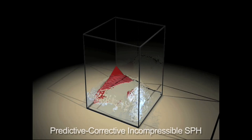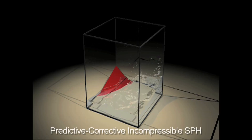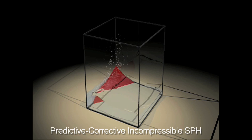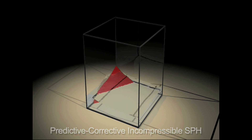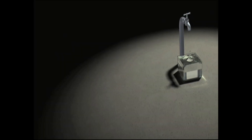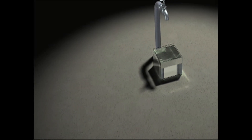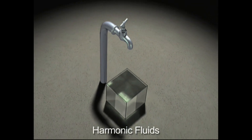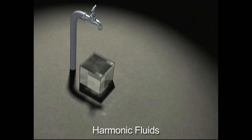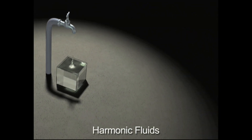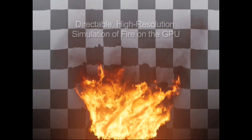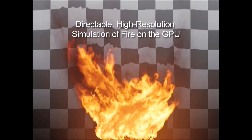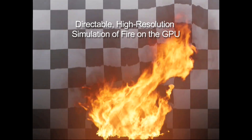As for simulations, a prediction correction scheme maintains incompressibility of water. And vibrating bubbles produce the sound of water. We can efficiently simulate fire by combining a coarse particle grid with view-oriented refinement.